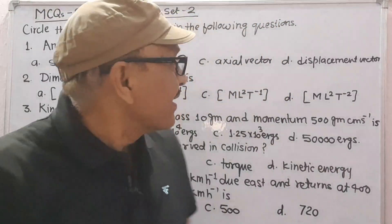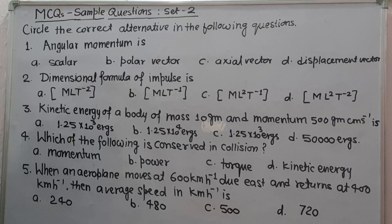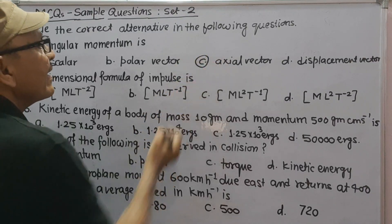Hello dear students, let us solve the multiple choice questions from sample questions set 2. Circle the correct alternative in the following questions. Question number one: angular momentum is - these are the options. We know that angular momentum is an axial vector, therefore the correct option will be C.